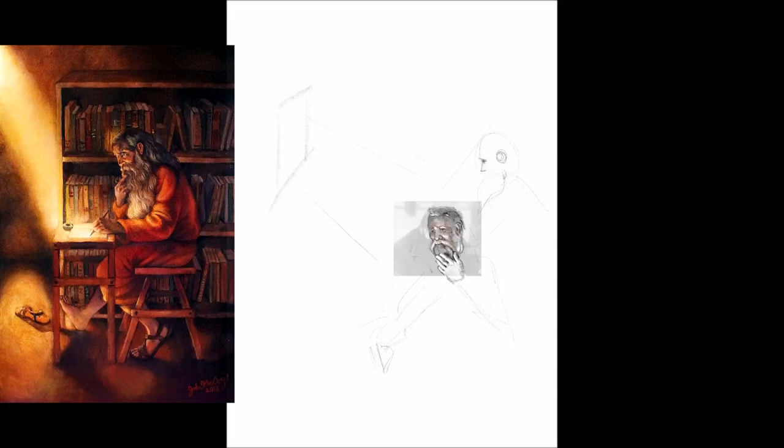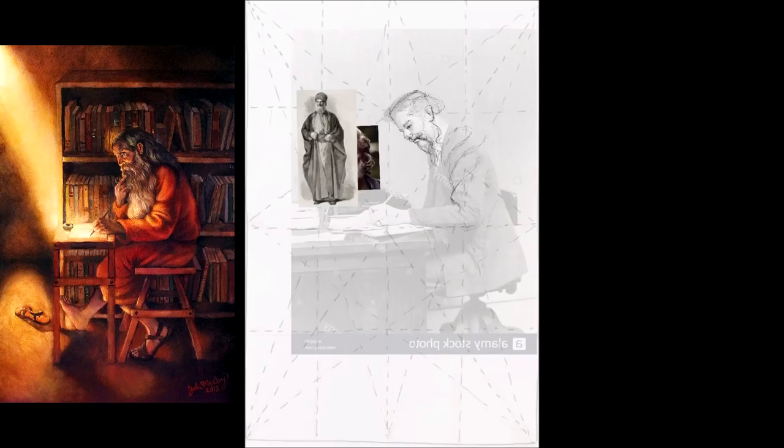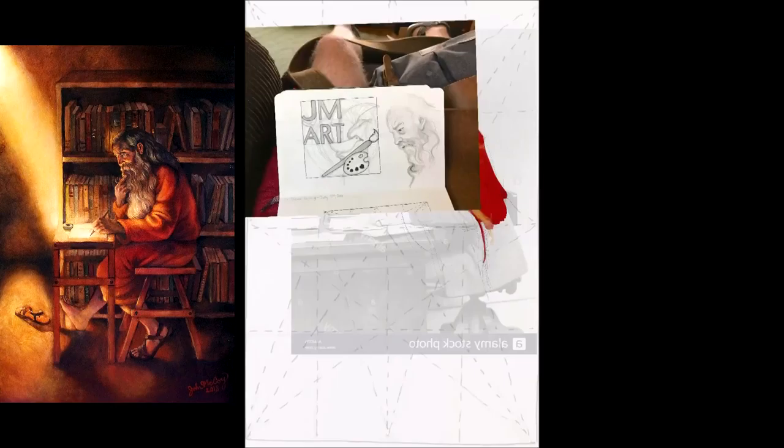As with a lot of my paintings, the light tells the story. The light in St. Jerome comes from the top left and casts down through the composition, following key compositional gridlines. St. Jerome is completely contained inside the rectangle that is the bookcase, and everything is geometrically broken down.